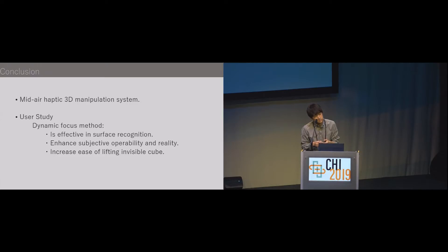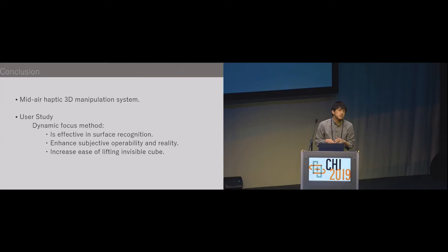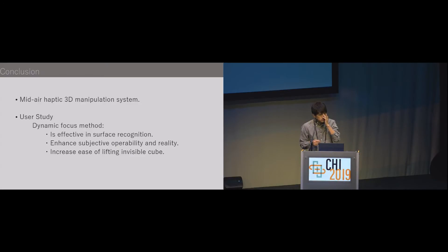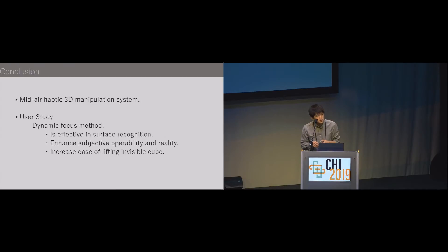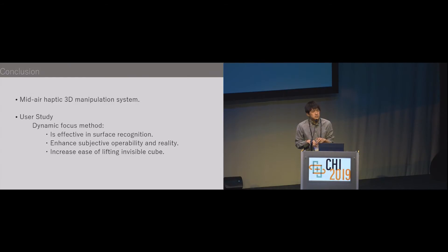I wanted to know if you considered adding more visual hints so that people know they are actually holding the cube, to improve your results. With mid-air haptics, you can't easily change the stiffness of your spring-damper system. So my question is: how do people actually know that they're holding the cube tightly enough to move it around? Was adding visual outlines over the cube when people were holding it considered to improve results?